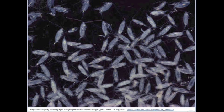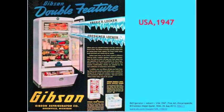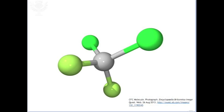An air conditioning unit in the 1970s — these devices, like the refrigerator, were to become widely used in the developed world throughout the 20th century, benefiting from the invention and application of the magic molecule. This magic molecule is better known as the CFC, or the chlorofluorocarbon: a molecule with carbon at its center, two fluorine atoms and two chlorine atoms joined at the four vertices of a tetrahedron.